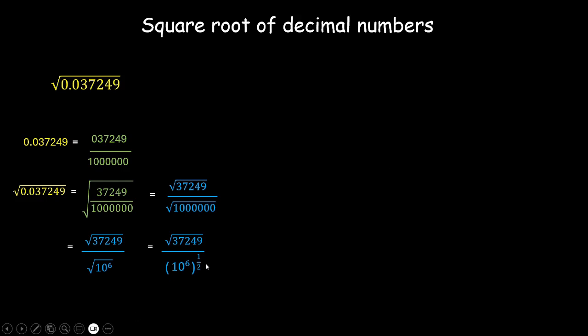So once we solve this, when we cancel out the powers it will be root of 37249 divided by 10 raised to the power 3 which is 1,000. Now this is the reduced form of my problem. I just need to find the square root of this integer 37249. So let's start.